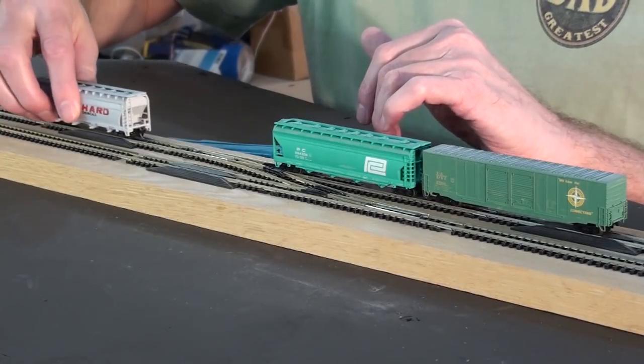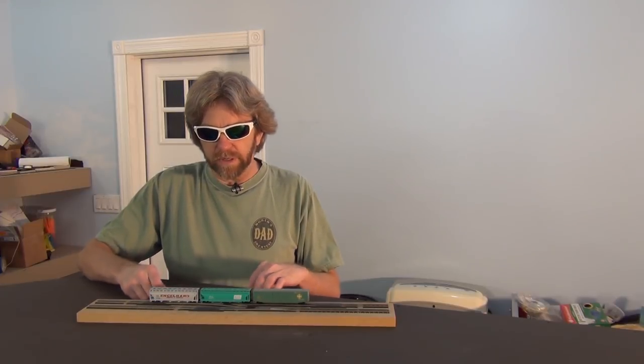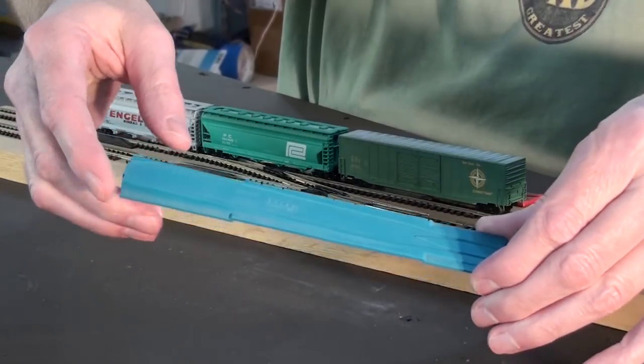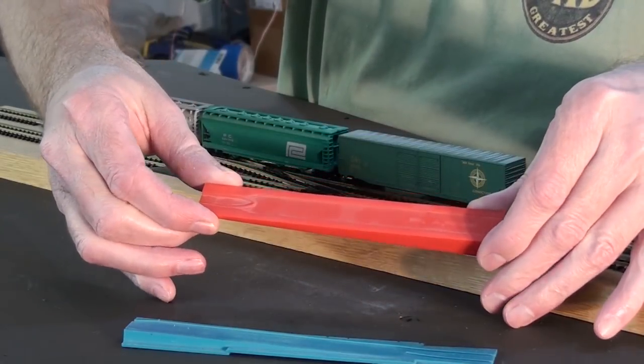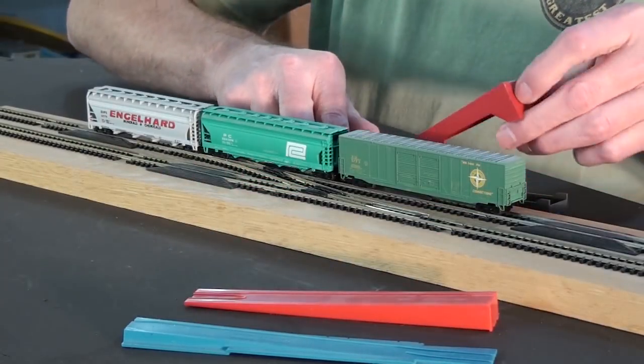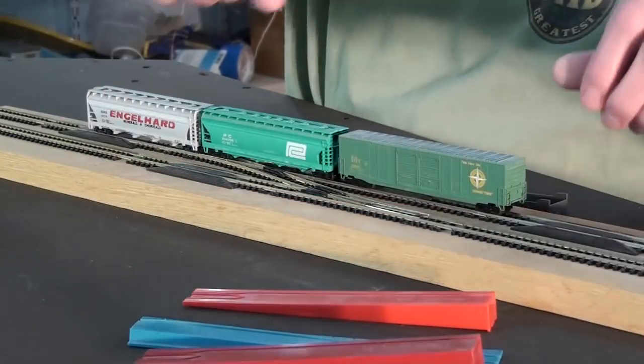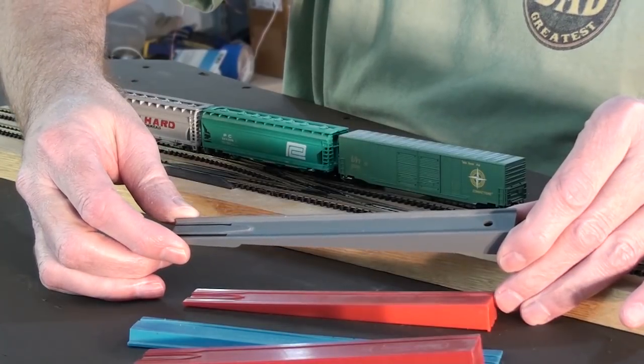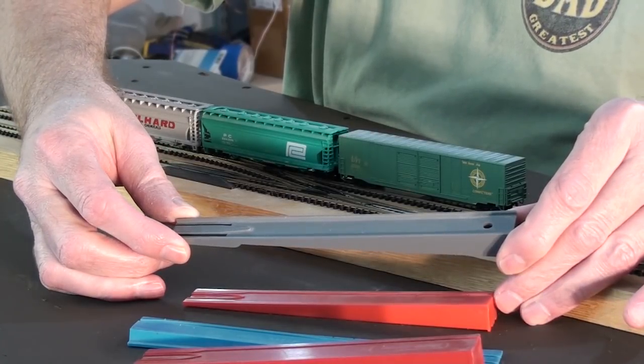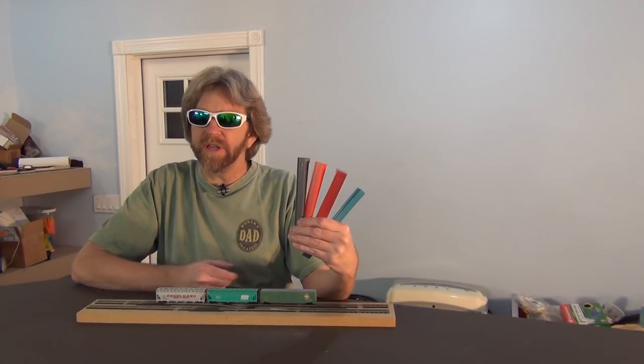But I was doing a video the other day and somebody noticed me using one of these re-railing ramps. You got one by Kato, a short ramp by Micro Trains, the tall ramp by Micro Trains which you can use on a curve, and this low profile mid-range ramp by Rick's Products. So we'll give these ramps a try and I'll show you how they work.